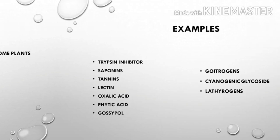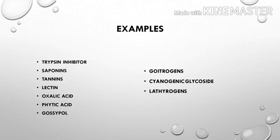Let's take a look at examples. Raw soybean contains trypsin inhibitor. Other anti-nutritional factors include saponins, tannin, lectin, oxalic acid, phytic acid, gossypol, goitrogens, cyanogenic glycosides, and lathyrogens. We will discuss the details about each of these.